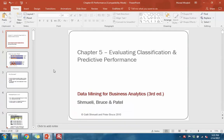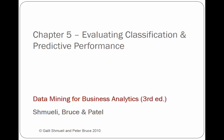In this chapter we will cover evaluating model performance. There are two things we are trying to predict: a continuous target variable or outcome variable, or a categorical or classified outcome variable. That is the difference between classification and predictive performance.